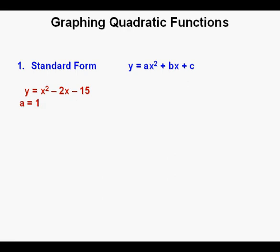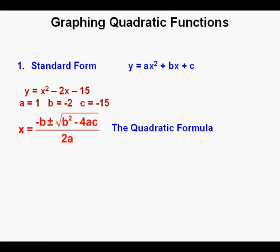We label a, b, and c in the quadratic function. Since it's just x squared, a equals 1. b equals negative 2, since it's negative 2x. And the constant c, or y-intercept, is negative 15. Now we'll look at the quadratic formula: x equals negative b plus or minus the square root of b squared minus 4ac, all over 2a. To start graphing, we need just the first part: negative b over 2a.